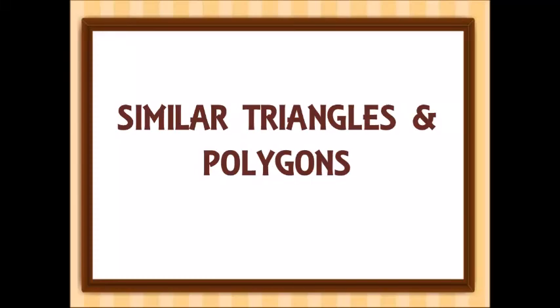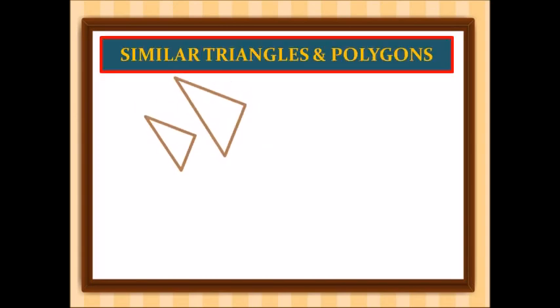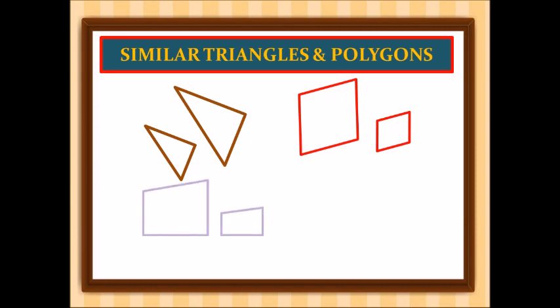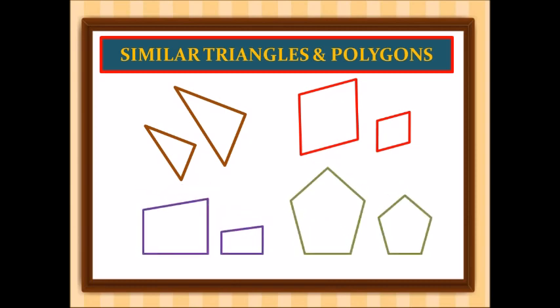Good morning once again, Grade 9. This morning we will be talking about similar triangles and polygons. These are some examples of similar figures: the triangle, the rhombus, the parallelogram, and lastly the pentagon. All of these are similar figures, but the question is: what makes these figures similar?